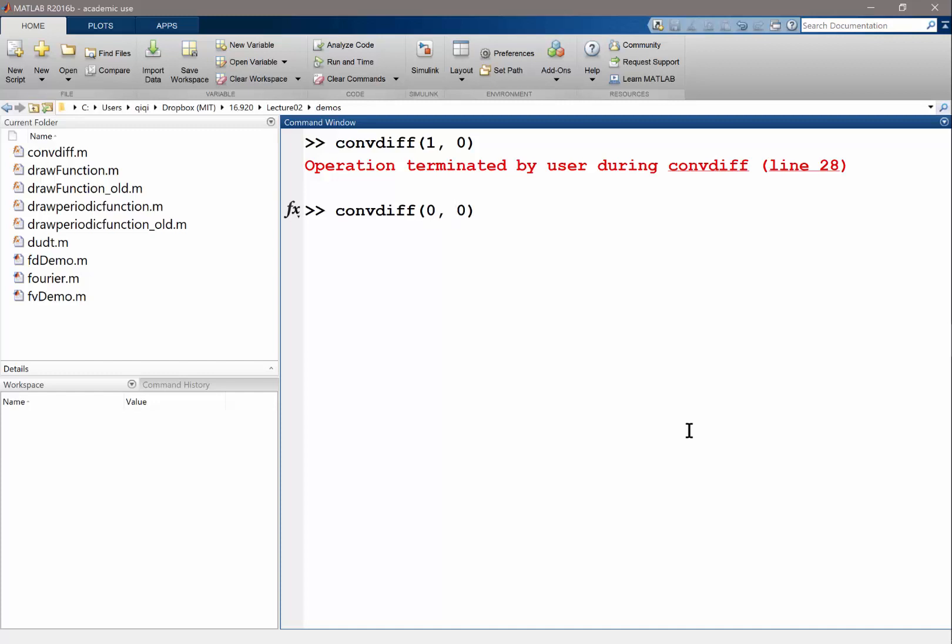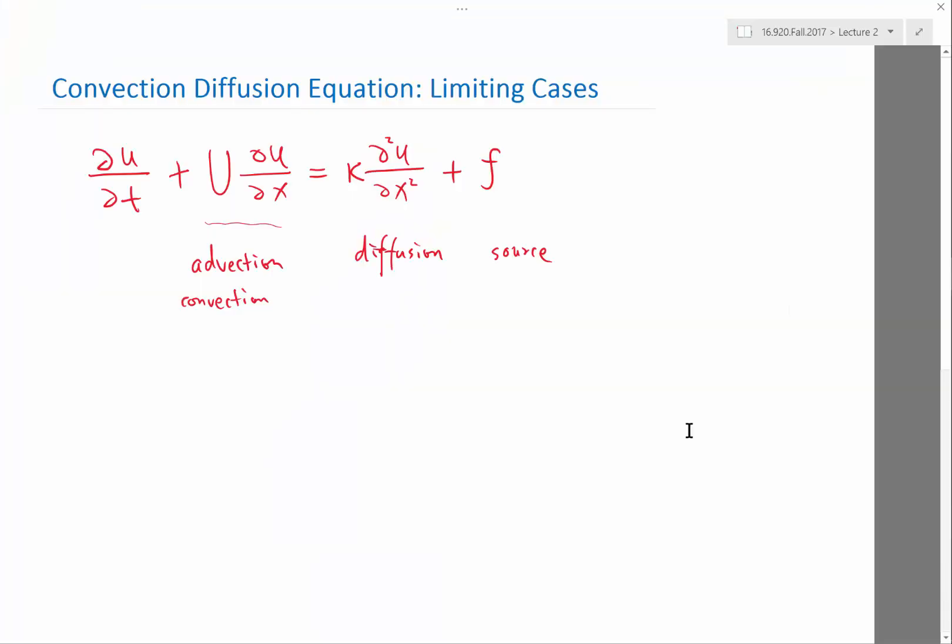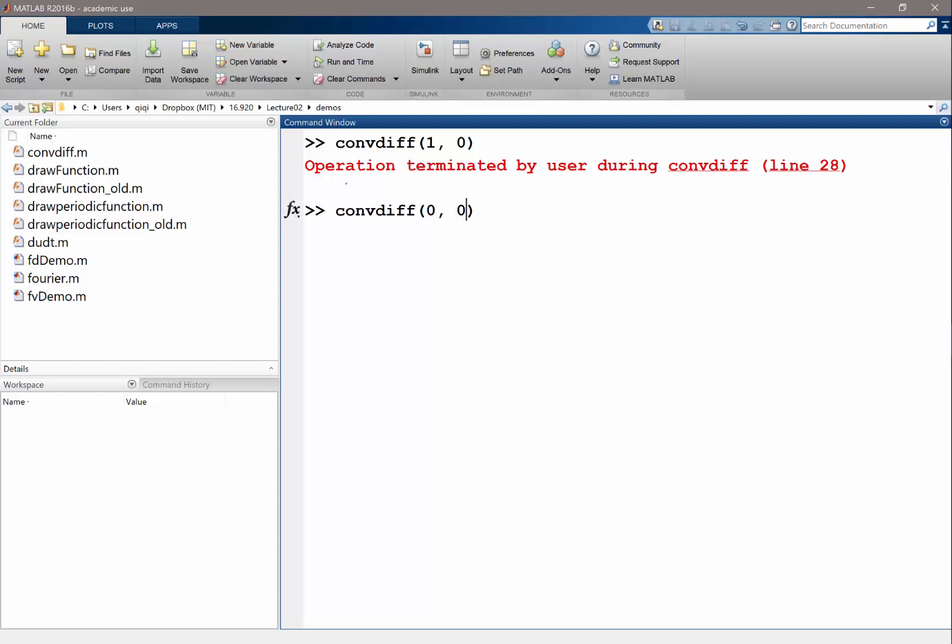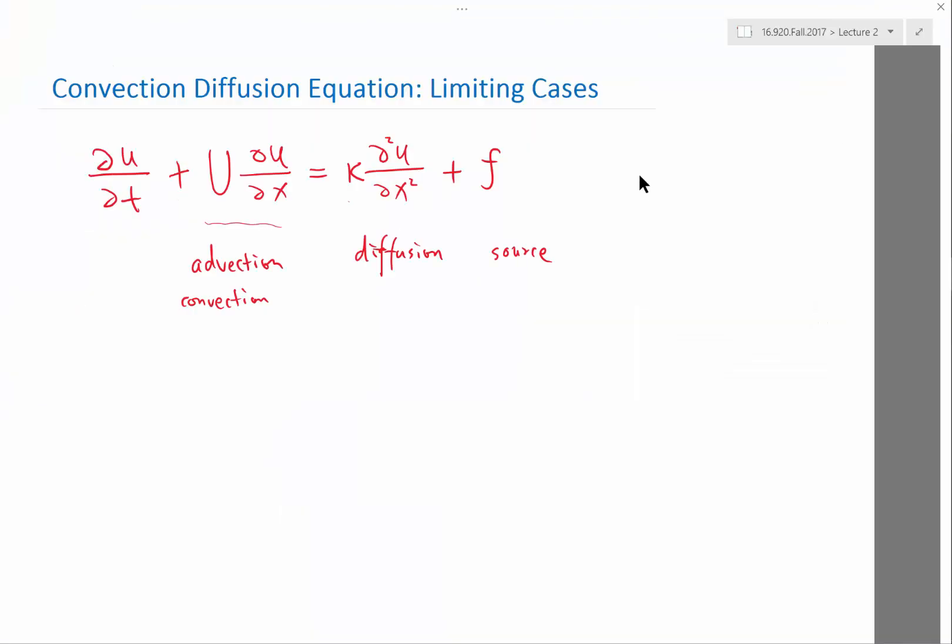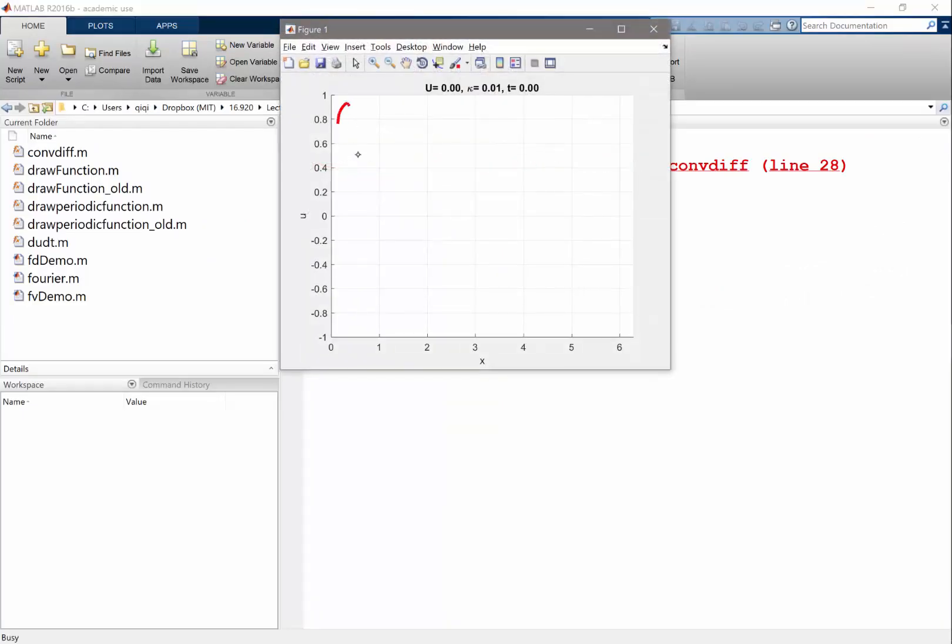On the other hand, if I set the advection velocity U - previously we set kappa to zero, U to one - if we set U to zero and kappa to something, let's say 0.01 to make things visible and slow, what we get is there is no bulk movement, but the solution keeps getting diffused out. It becomes smooth and then smoother and smoother. If we wait for long enough time, it'll become a flat line.